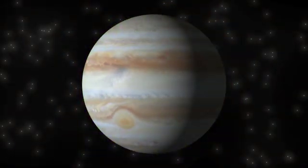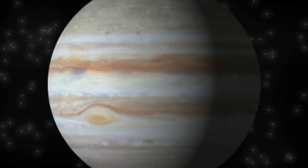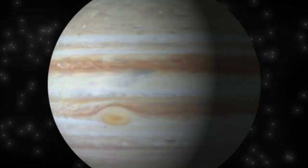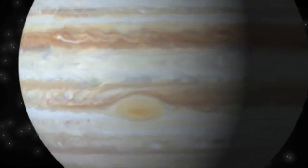It is a gas giant and has no solid surface. Its atmosphere forms bands of poisonous clouds that circle the planet in opposite directions. The giant red spot is a huge storm that has been raging for hundreds of years.